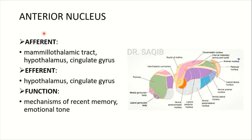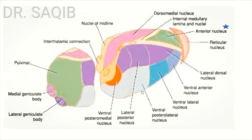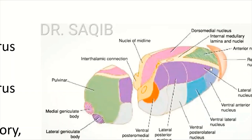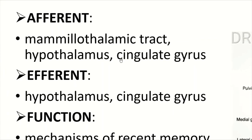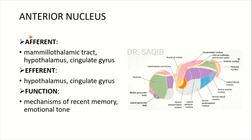Now the nuclei will be discussed one by one in a simple manner. First, the anterior nucleus: its afferents are via the mammillothalamic tract from the hypothalamus and the cingulate gyrus. Efferents from this nucleus go back to the hypothalamus and cingulate gyrus. The function of this nucleus is the mechanism of recent memory and emotional tone.